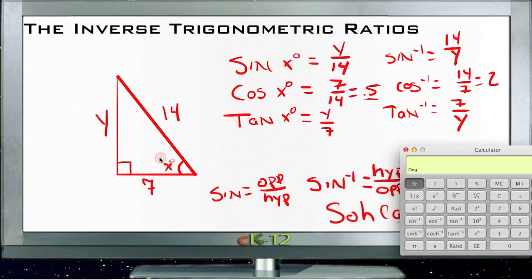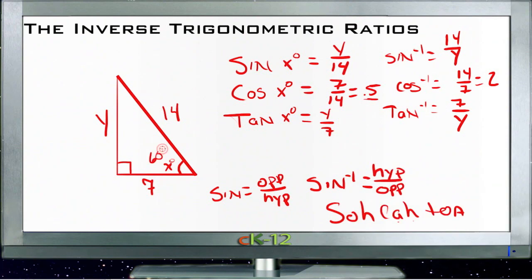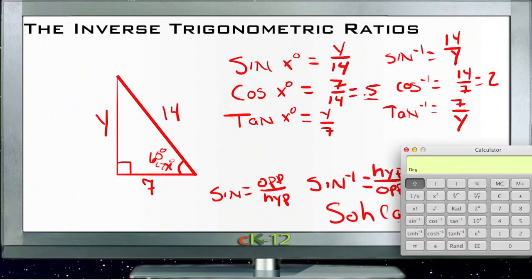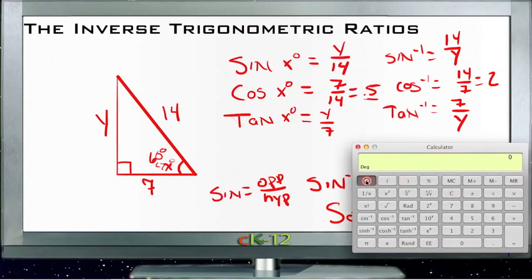And 60 degrees is the actual angle measure of this angle. If I punch in just the COS of 0.5, I get basically 1. That doesn't help us at all. That's not the angle measure at all.